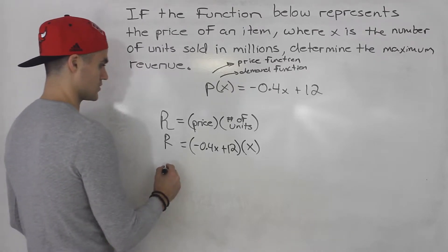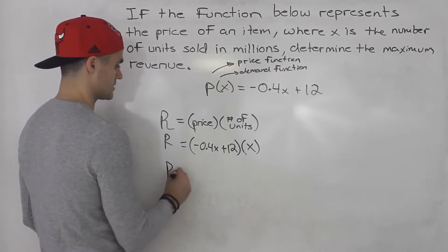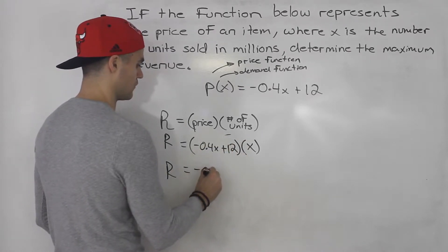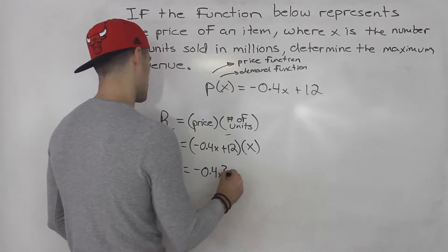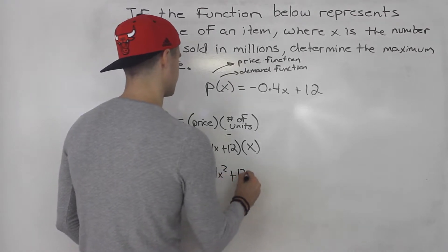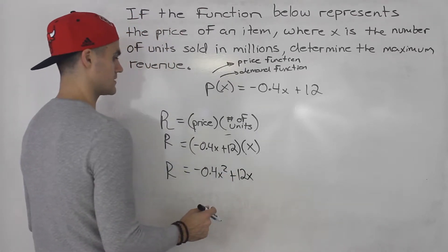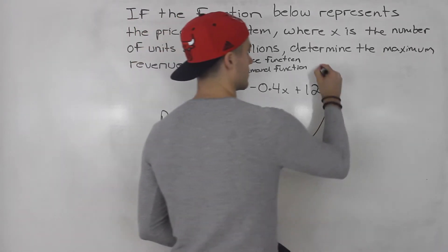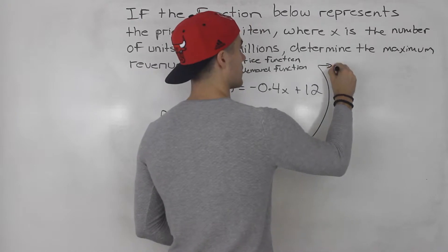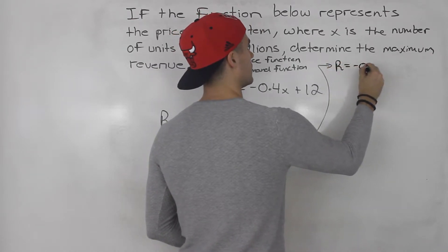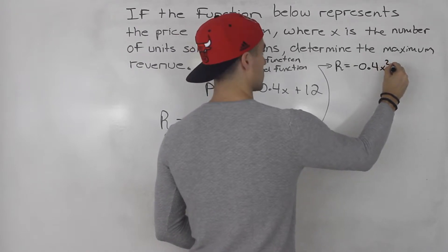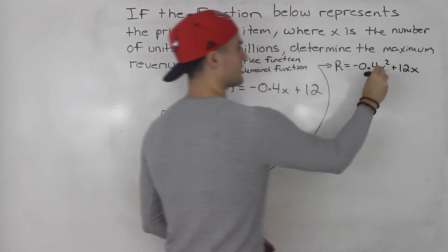And now they're asking for the maximum revenue. What we can do, multiple ways to do this, I'm going to distribute the x inside the bracket. So I'll have negative 0.04x squared plus 12x. So let's rewrite that up here actually. So we got R equals negative 0.04x squared plus 12x.